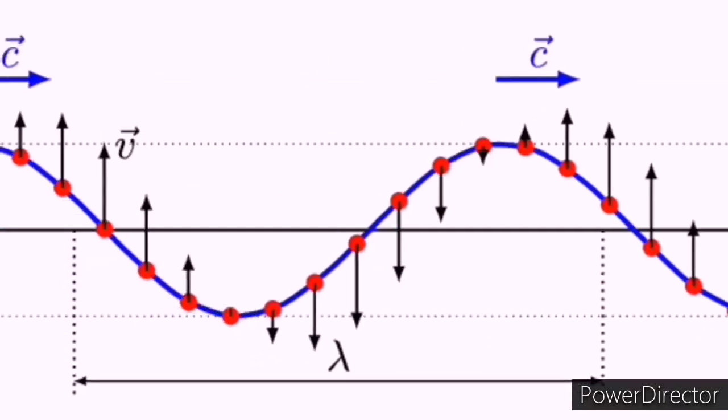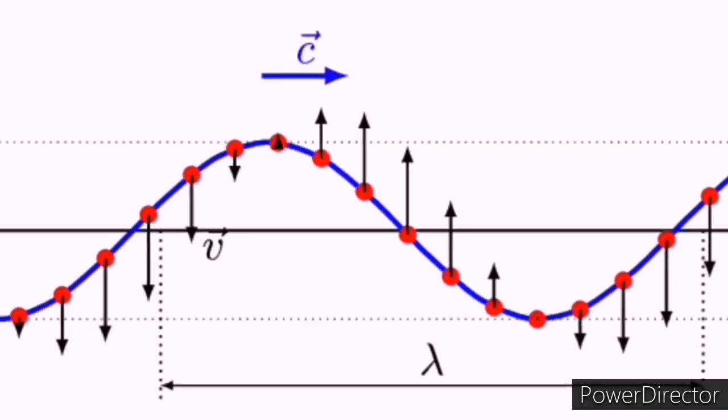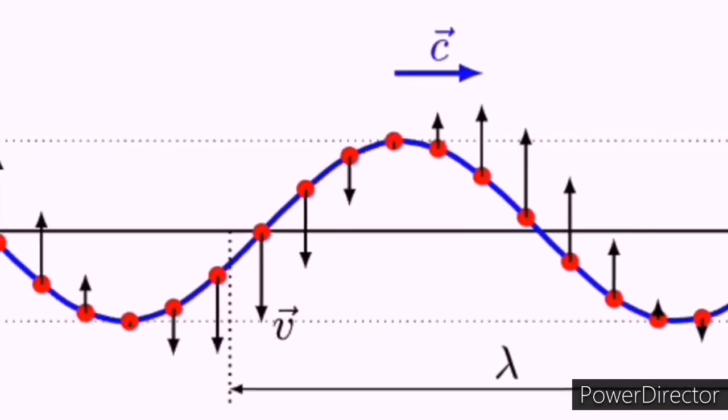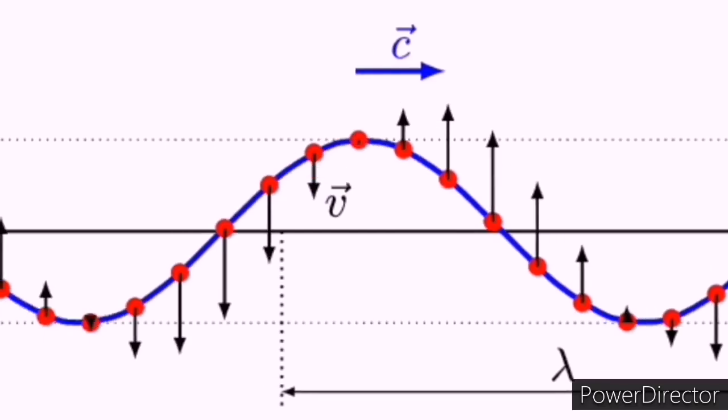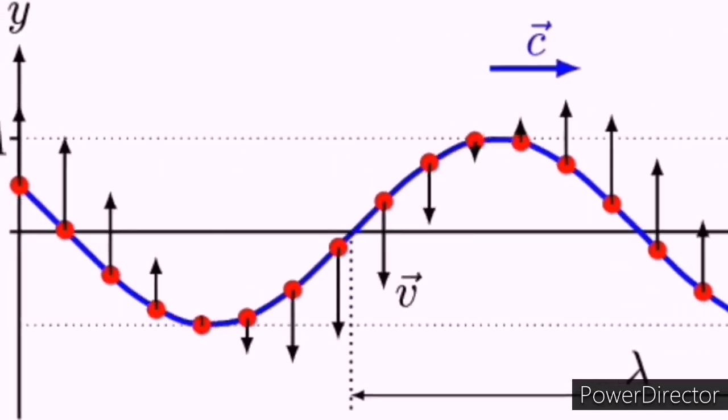Sound waves are often simplified to a description in terms of sinusoidal plane waves, which are characterized by these generic properties: frequency or its inverse wavelength, amplitude, sound pressure or intensity, speed of sound, and direction.